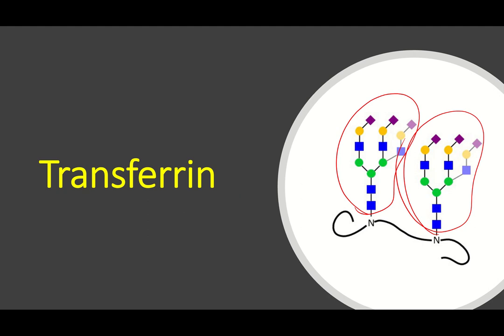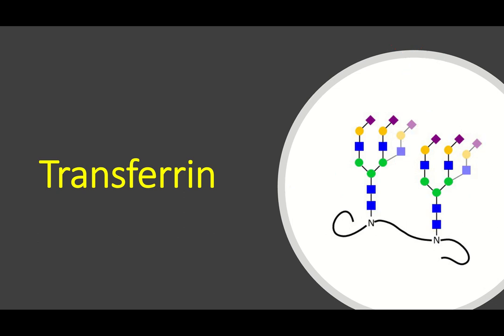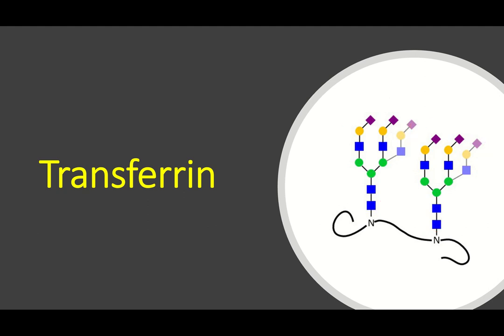In proteoglycans, the carbohydrate portion is linear and there will be a disaccharide repeat. But in glycoproteins, the oligosaccharide chains are short but highly branched. In glycoproteins, sialic acid is most of the time the terminal sugar — it is always the last sugar in the glycoprotein.